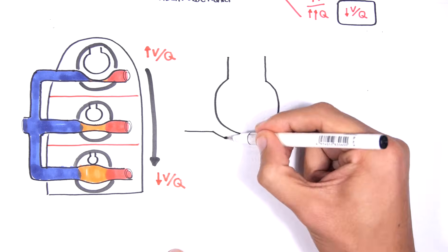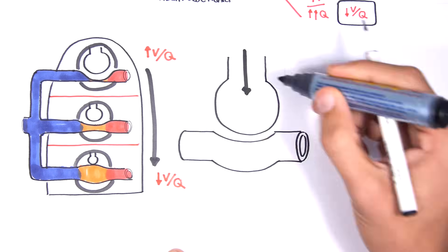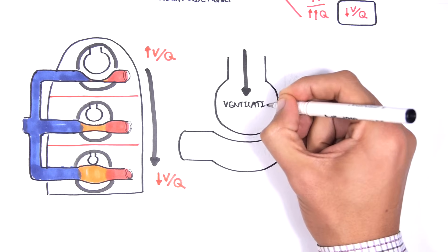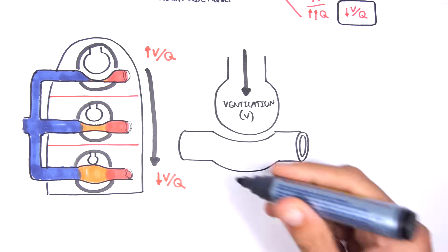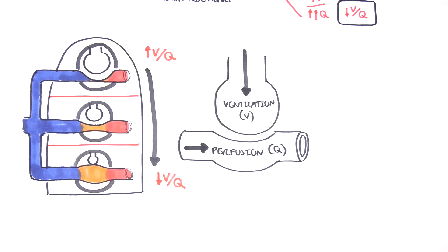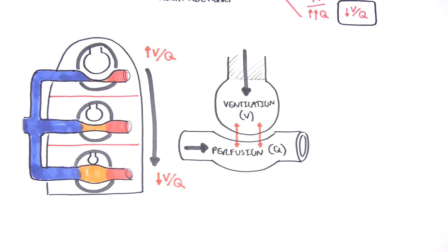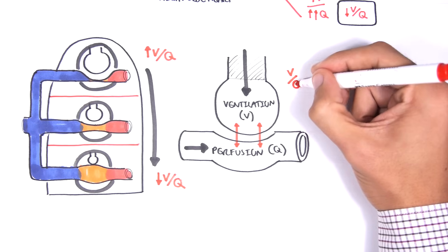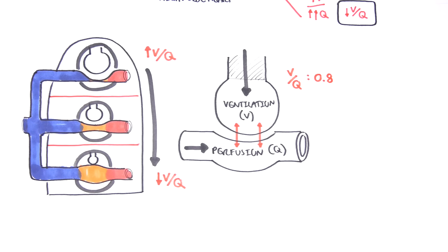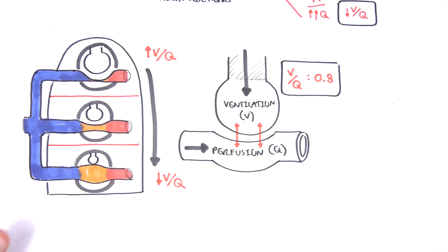The ventilation is the amount of air coming into the lungs, specifically into the alveoli ready for gas exchange. The perfusion is the blood flow to the lungs, to the alveoli and thus ready for gas exchange. The average ventilation-perfusion ratio is 0.8, which really means that there is more perfusion — more blood flow to the lungs, to the alveoli — than there is ventilation.